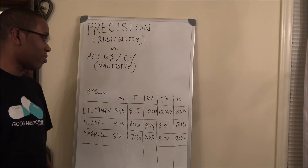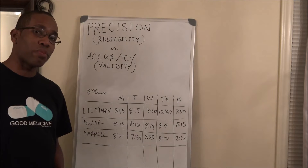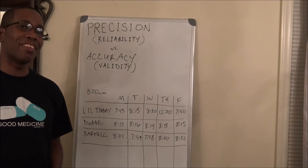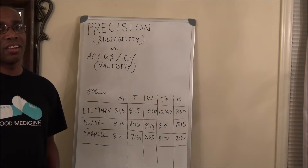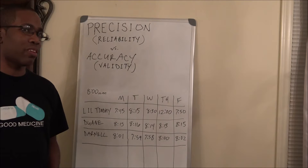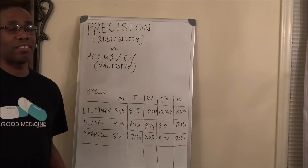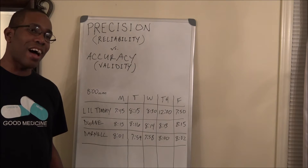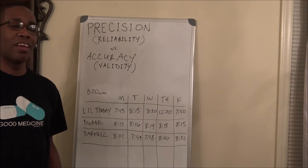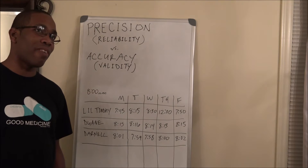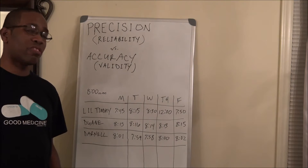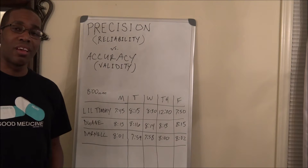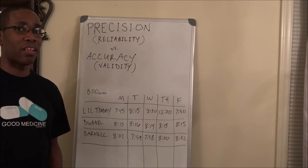Unfortunately, none of those times — that congregation of numbers — is near 8 o'clock. It's not near when he was supposed to be in class. So he's not going to be accurate, and he's not going to be valid. He is precise and reliable, but he's not going to be accurate or valid.